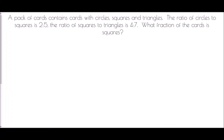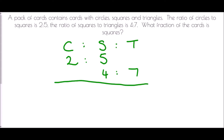Next, we're going to look at a slight variation where we have the introduction of fractions. A pack of cards contains cards with circles, squares and triangles. The ratio of circles to squares is 2 to 5. The ratio of squares to triangles is 4 to 7. What fraction of the cards is squares? We do the same thing as before: circles to squares to triangles. The overlap is 5 and 4 — a common multiple is 20.